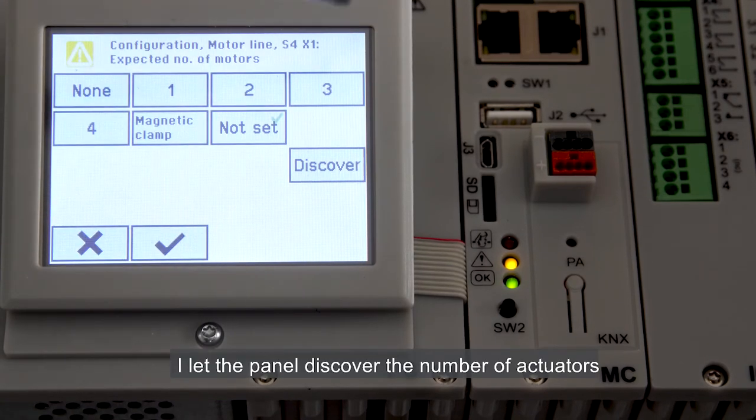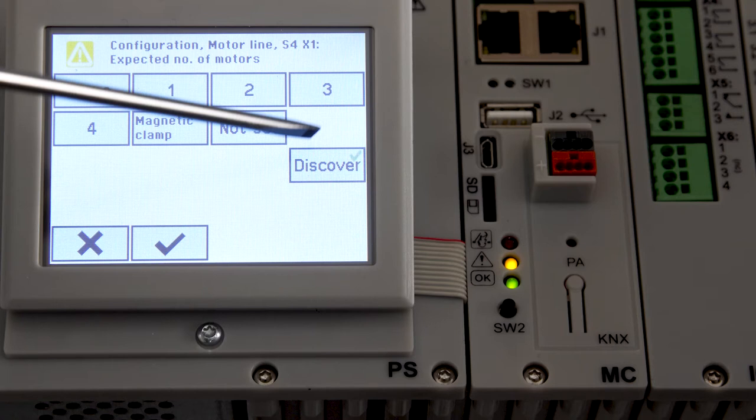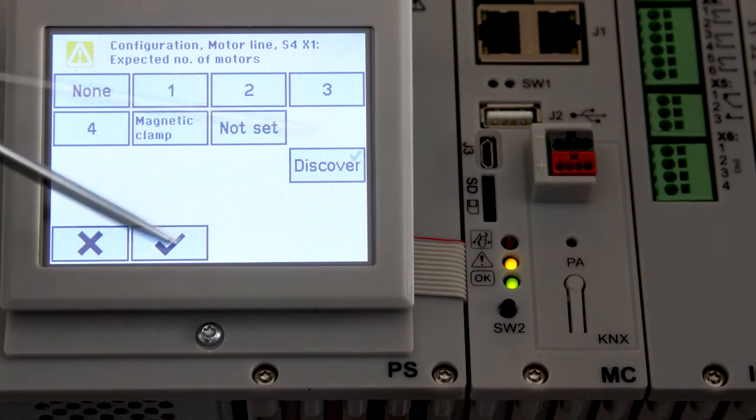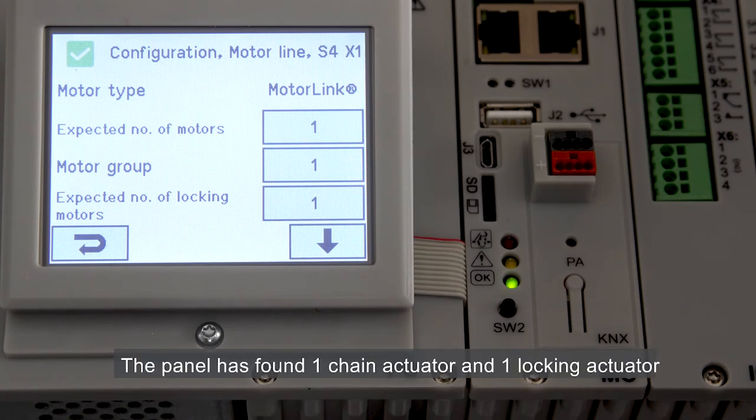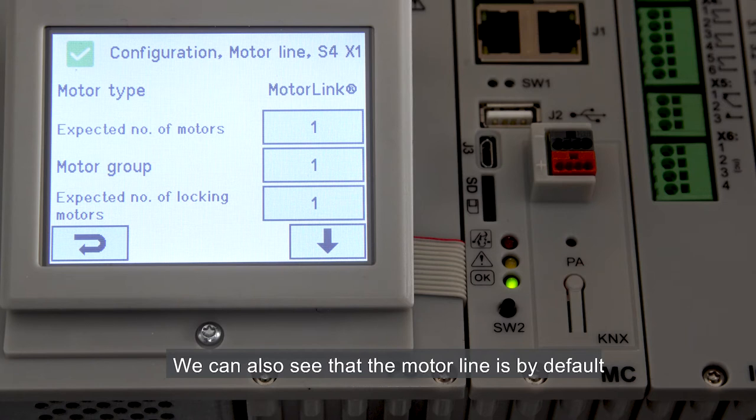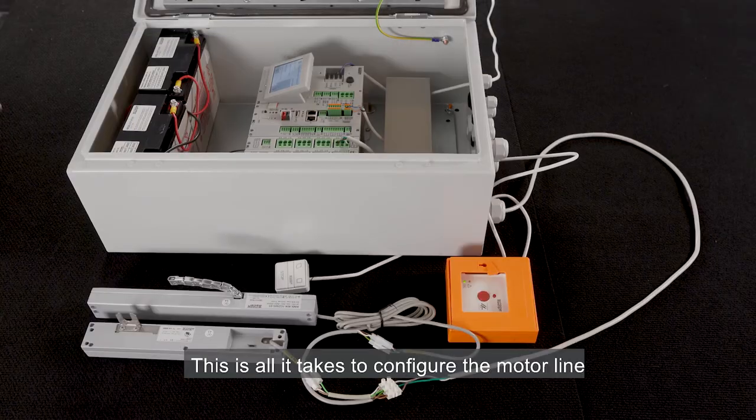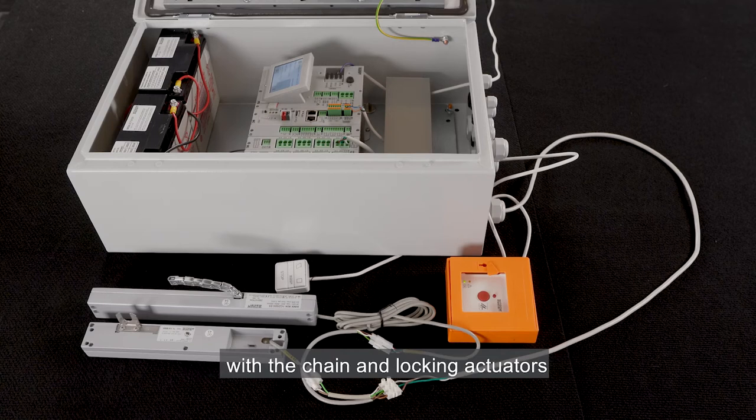I let the panel discover the number of actuators by pressing the Discover button. The panel has found one chain actuator and one locking actuator connected to this motor line. We can also see that the motor line is by default associated with motor group 1. This is all it takes to configure the motor line with the chain and locking actuators.